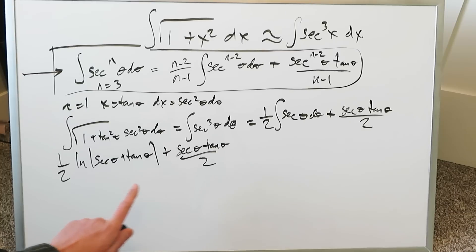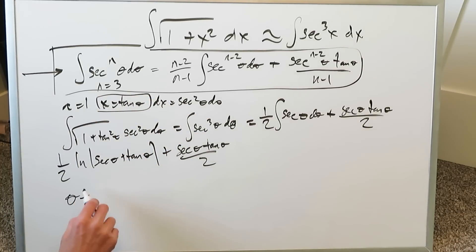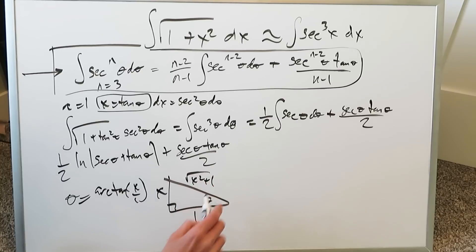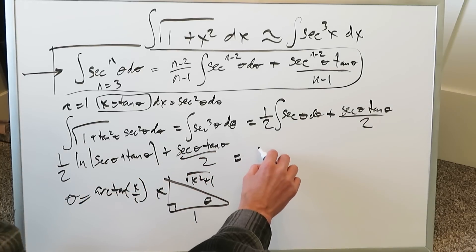Now you want to clean this up because you have too many thetas here and theta has a meaning. The theta is basically arctan x over 1, because when you solve for theta you're getting arctan x over 1. When you compose a triangle with regards to this you get x, 1, and you get x squared plus 1. Now all you have to do is plug in these thetas into this and you'll generate your antiderivative.